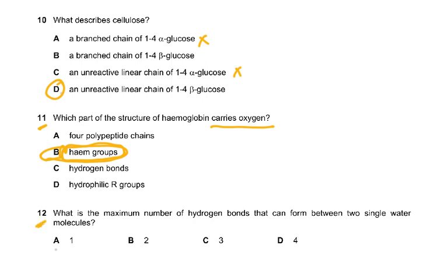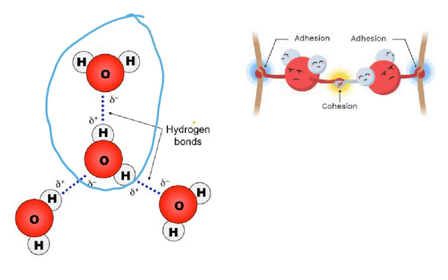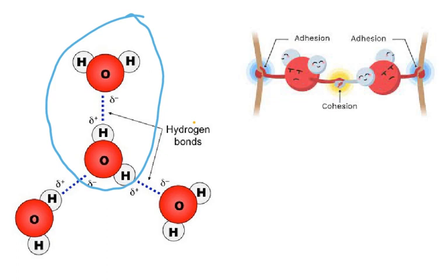Question 12: What is the maximum number of hydrogen bonds that can form between two single water molecules? The answer is one. Each water molecule forms only one hydrogen bond with another water molecule. Cohesion refers to water molecules bonding with each other, while adhesion is bonding with the walls of a vessel such as the xylem. If you consider four water molecules, you can see there are three hydrogen bonds holding them together.